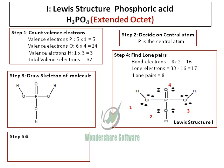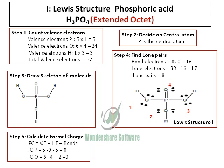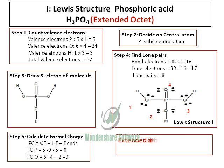When you calculate the formal charge, you will find that phosphorus has 0 formal charge, and oxygen also has 0 formal charge. So this structure with a phosphorus double bond O is called Lewis structure 1, or the Lewis structure which has got an extended octet of phosphorus, with 10 electrons around it and no charge on the atoms. It is possible for phosphorus to extend this octet because it has a D sub-shell.